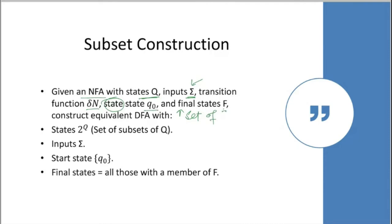Construct equivalent DFA with states 2 to the power Q, which is the power set of Q. Q is the set of states for NFA. Inputs—we are having the same input symbol for DFA also, that is sigma, and starting state. You will have the same starting state here also, and final states equal to those with a member of F. I have already told you in the previous method also.